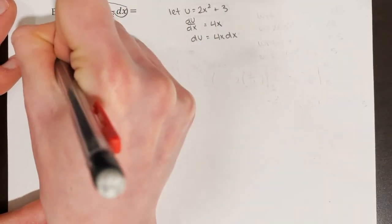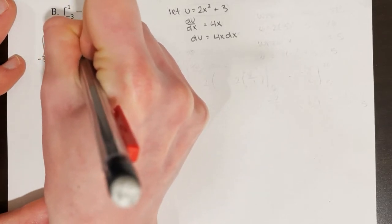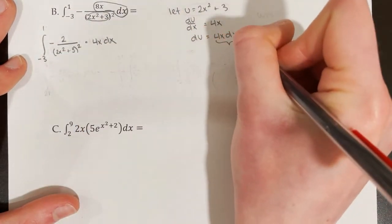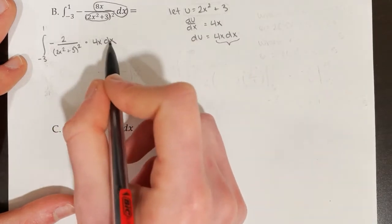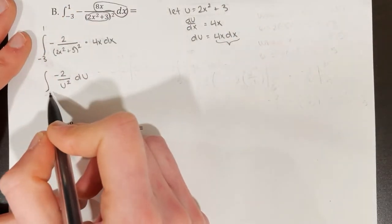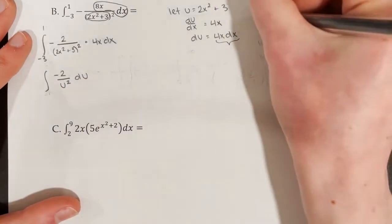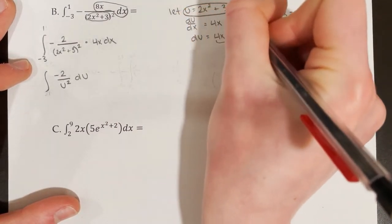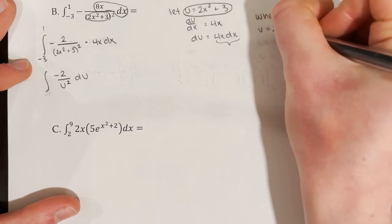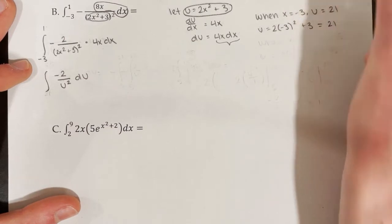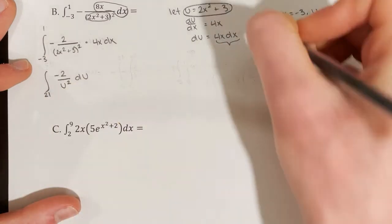So then I have the integral from negative 3 to 1 of negative 2 over (2x squared plus 3) squared times 4x dx. I've separated this into two parts so I can swap things out. I put du for 4x dx, and u for 2x squared plus 3. This is where I need to change my bounds. When x equals negative 3, what is u? Using the equation: u equals 2 times negative 3 squared plus 3, which is 21. So when x equals negative 3, u equals 21 — that's the new lower bound.